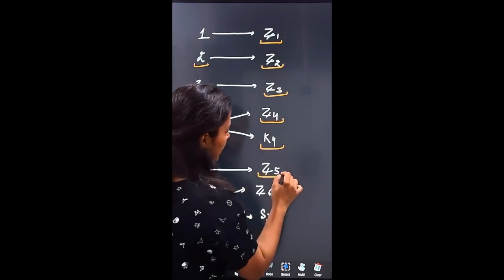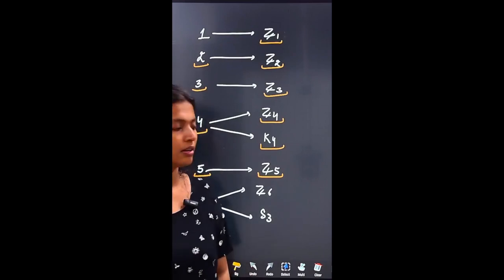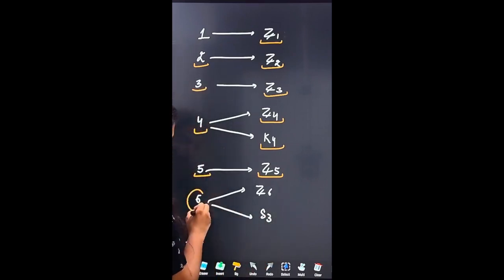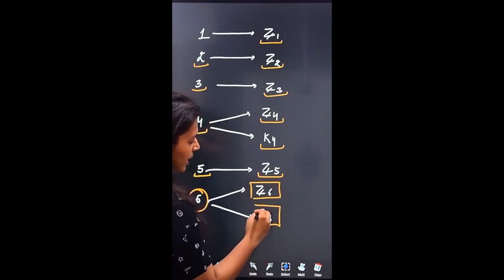The order five groups are Z5, but there will be no possibility of non-abelian. So the order six groups are either cyclic abelian or non-cyclic abelian.